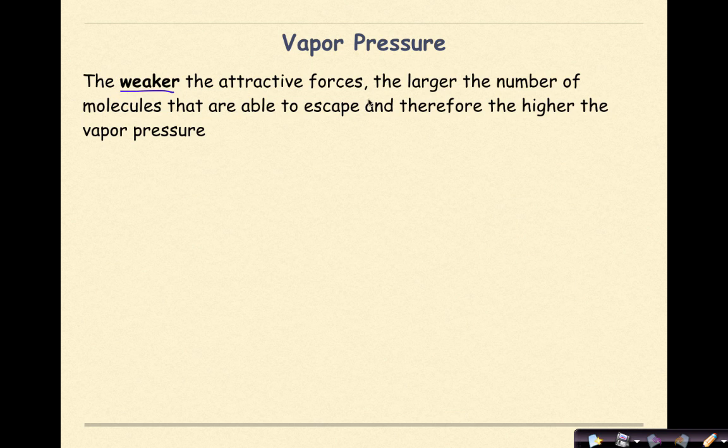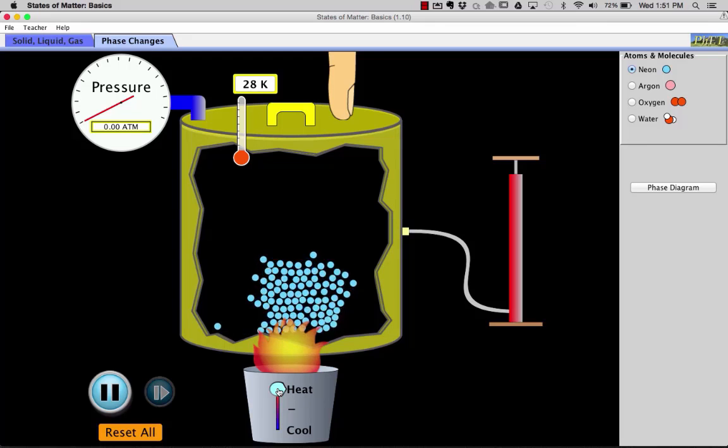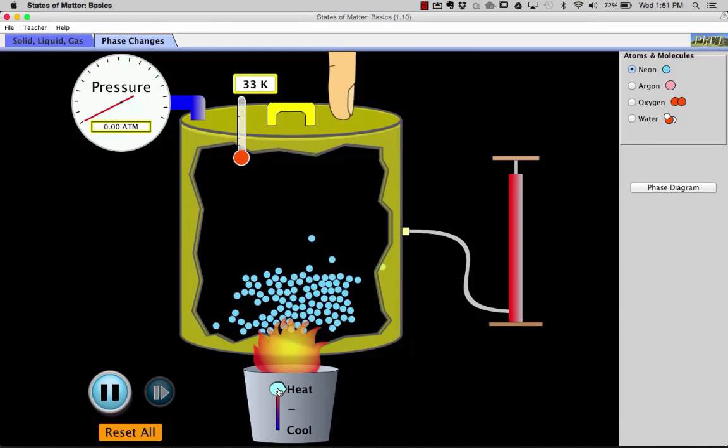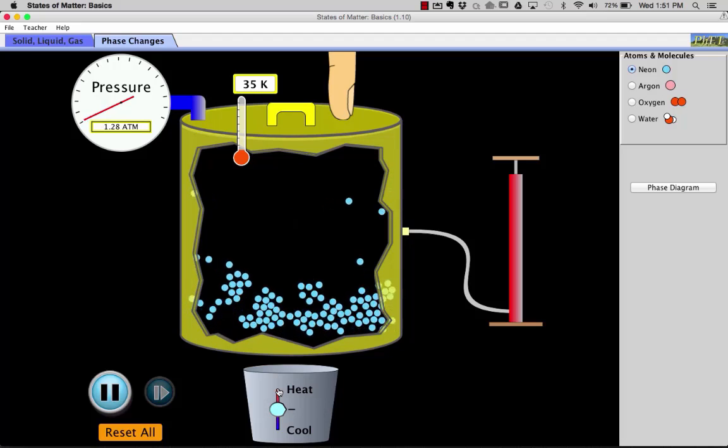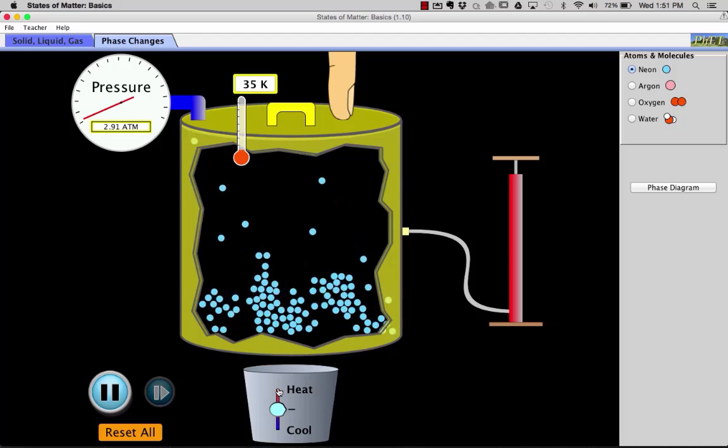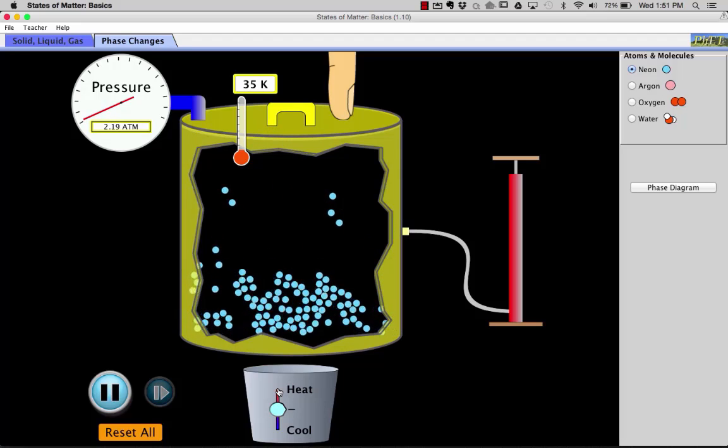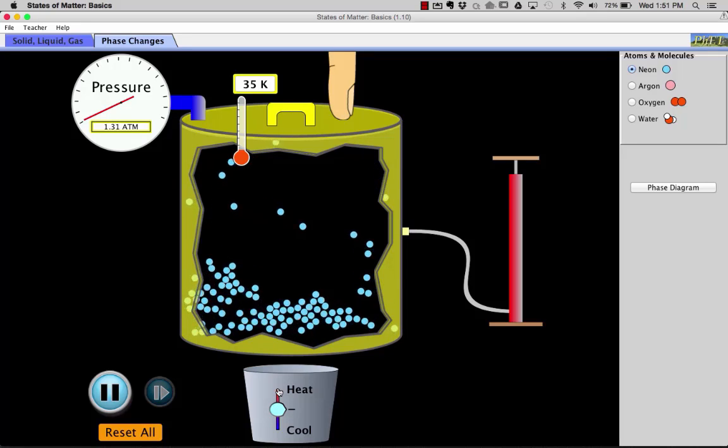And we see that in this diagram right here. The weaker the attractive forces, the larger the number of molecules that are able to escape, and therefore, the higher the vapor pressure. So we can see in this particular diagram is that as we add heat to solid neon, the particles are going to break apart, and particles and atoms from everywhere within the solid are now going from the liquid phase into the gaseous phase. And those particles are not coming just from the surface, but all the way through the substance.